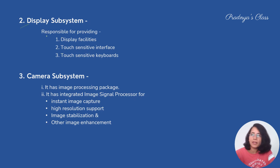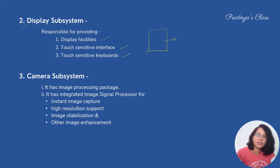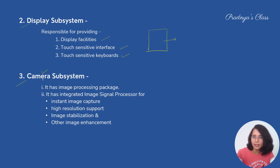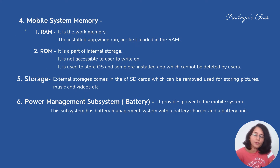The second component of the mobile system is the display system. It provides display facilities, a touch-sensitive interface, and touch-sensitive keyboards. The third component is the camera — the most fascinating part of the mobile. It has image processing packages and integrated image signal processors. The processor handles image capturing, provides higher resolution support, image stabilization, and other enhancements.